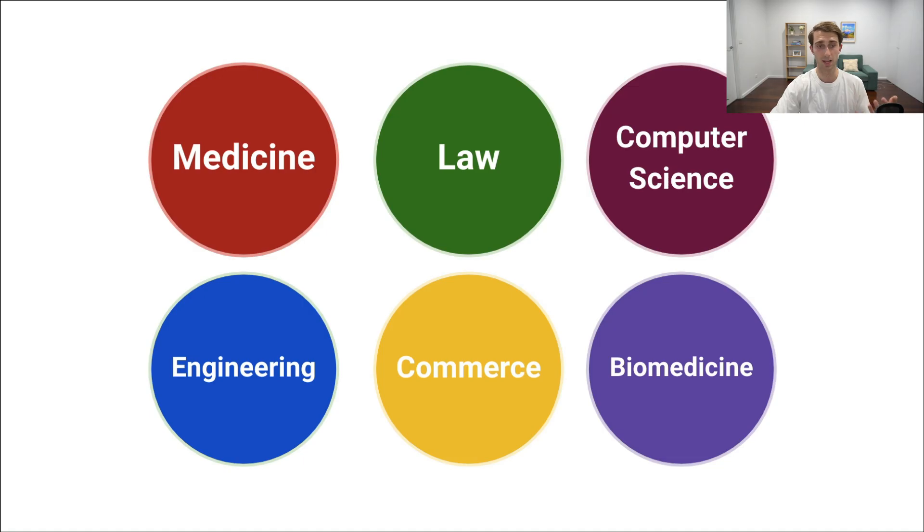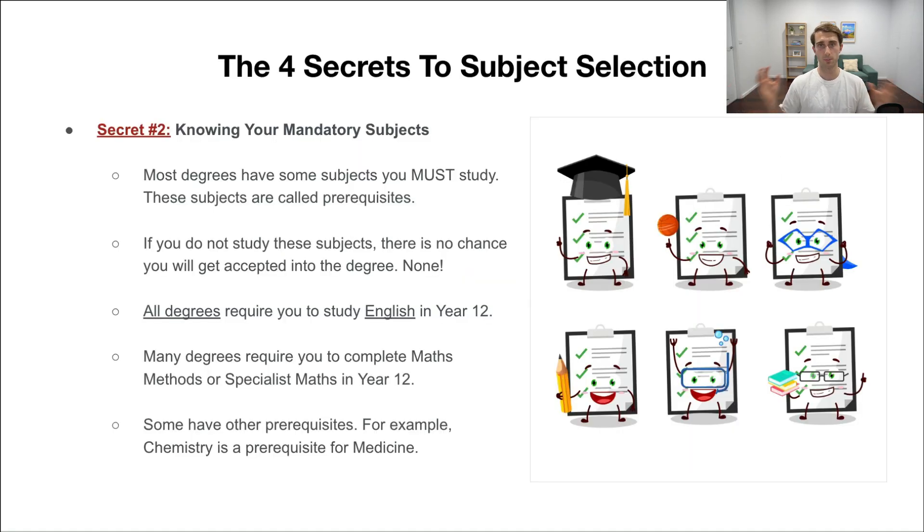It's really important to know what these prerequisites are for your degrees. Otherwise, you'll potentially do really well, get the scores you need overall, but could not get accepted just because of this reason. This is probably the first thing to consider when choosing subjects: make sure you do all the prerequisites you need to do. Simplest way to figure this out is just look on the university website. They make it really easy to find.